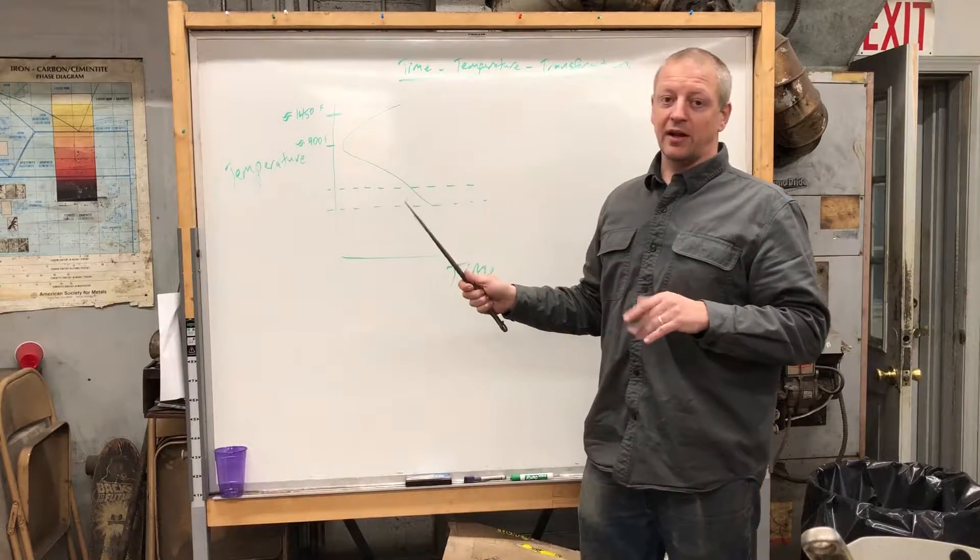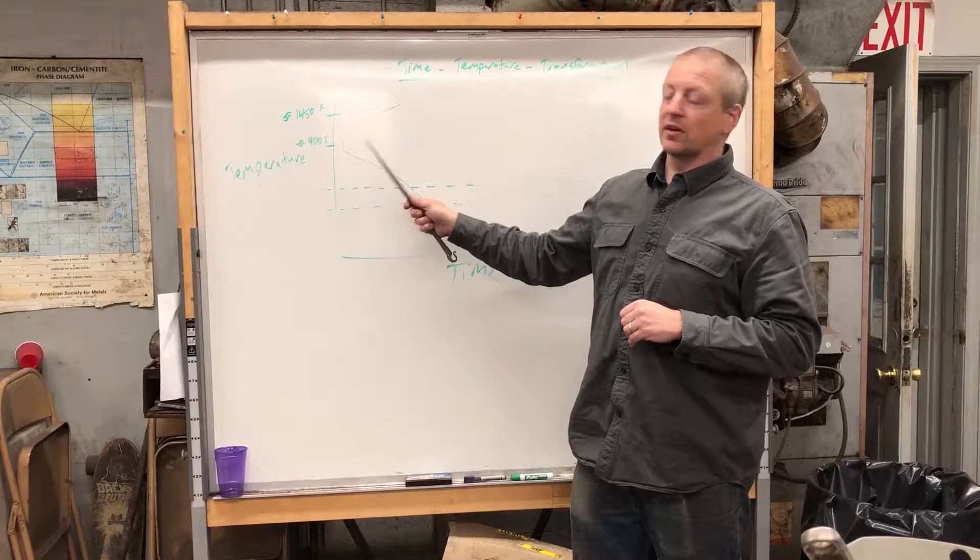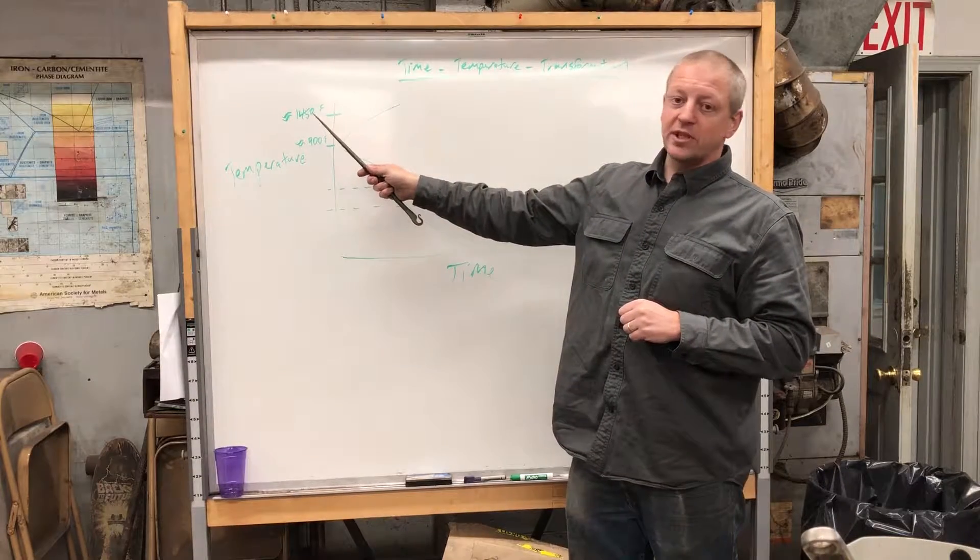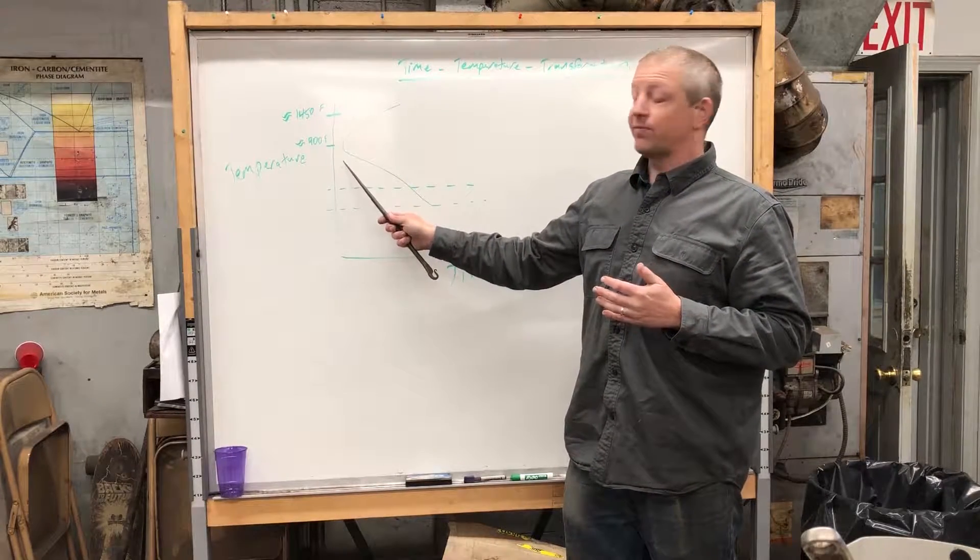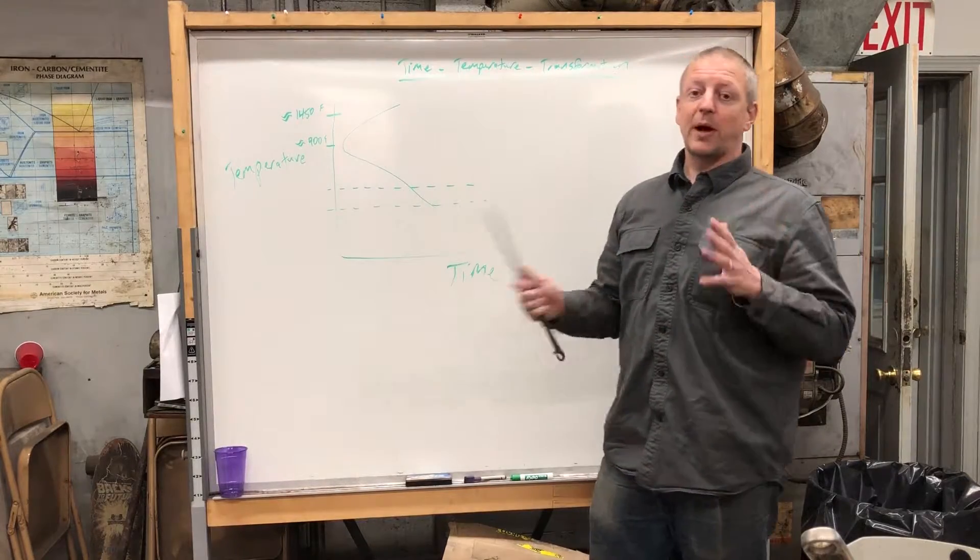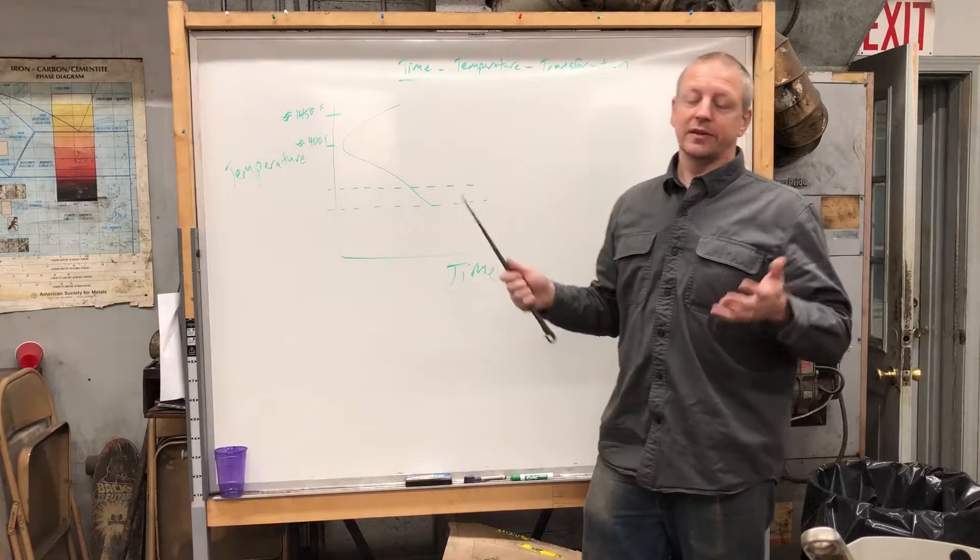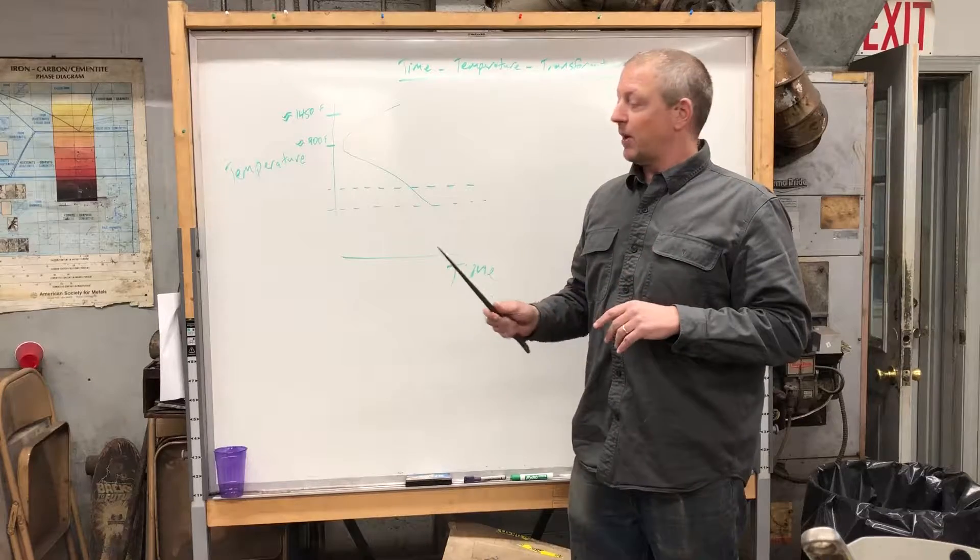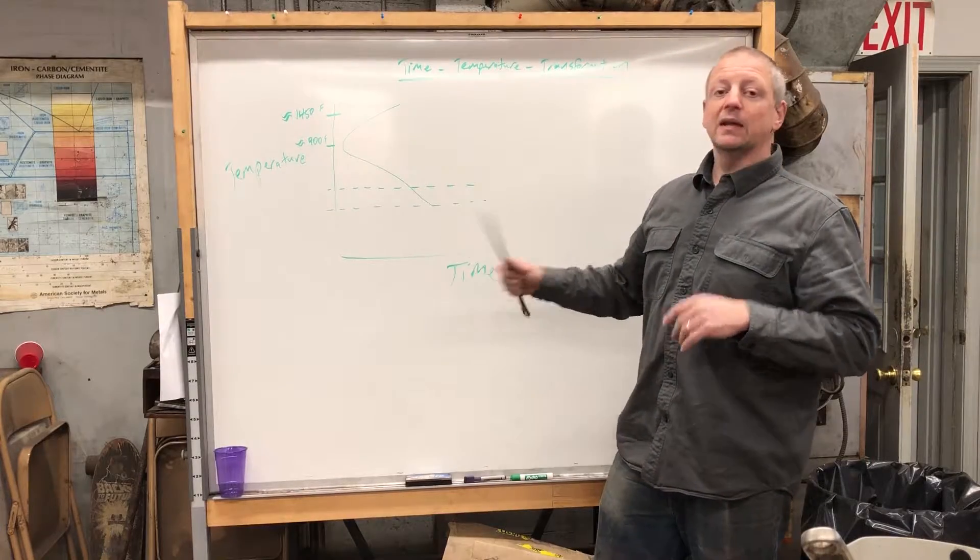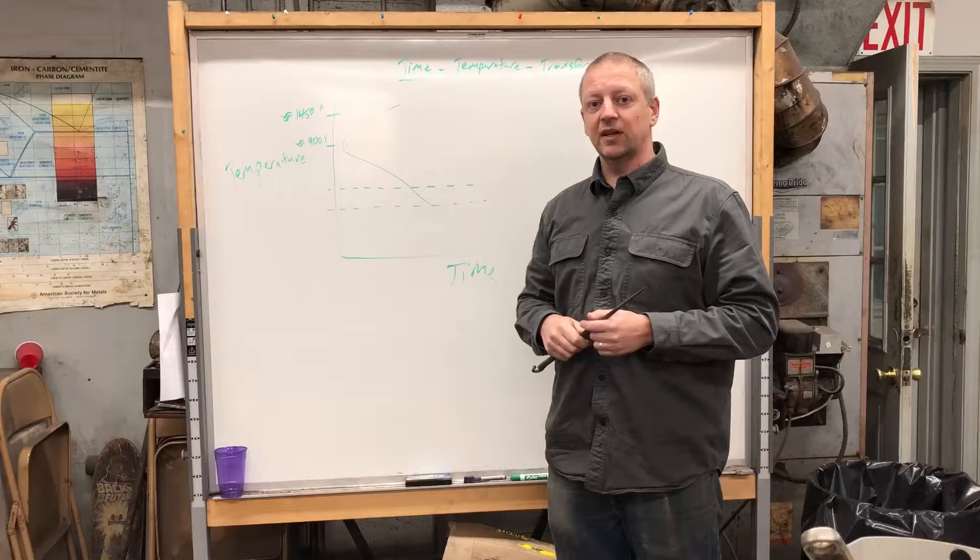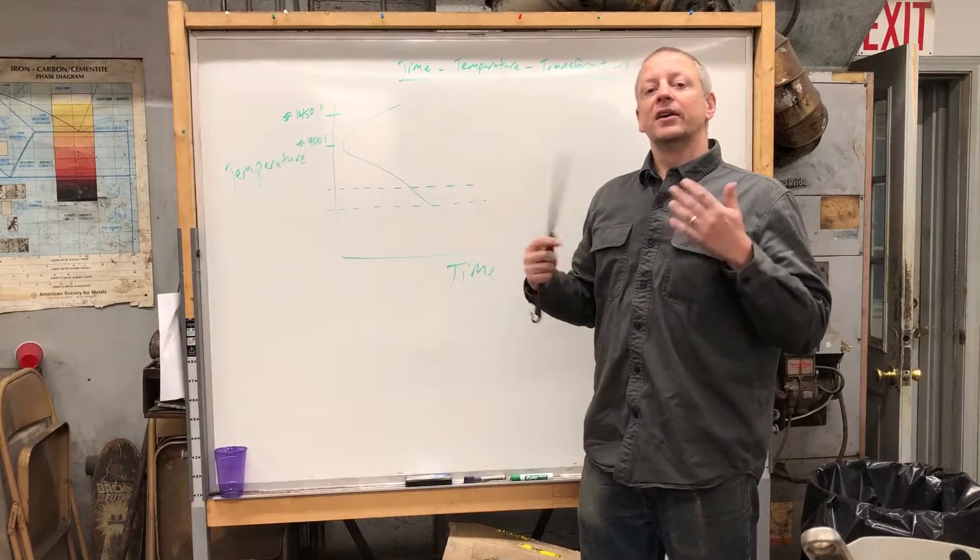One common aspect of the TTT diagram is what we call the nose of the curve. Basically, if you're at 1450 you've got austenite. You quench—if you pass in front of the nose of the curve, you have the possibility of getting full martensite. If you pass through this curve somewhere, you're going to get mixed structures. If you pass in front of the nose, make it down through this band, you should have essentially full martensite.